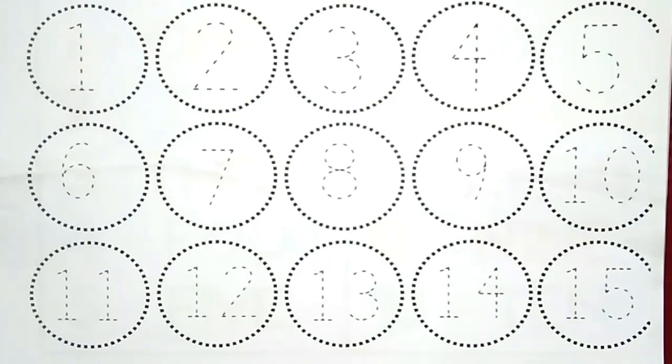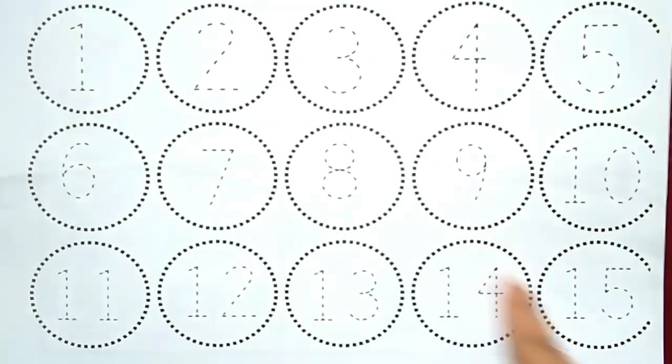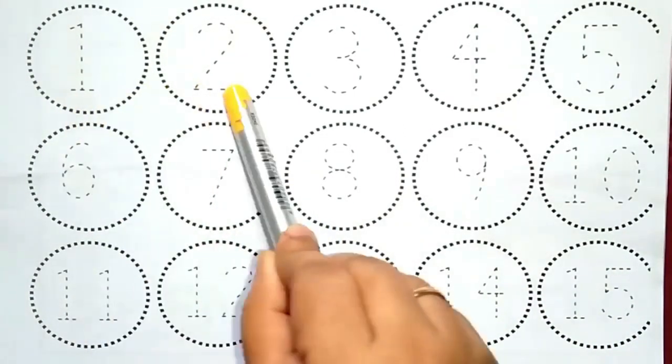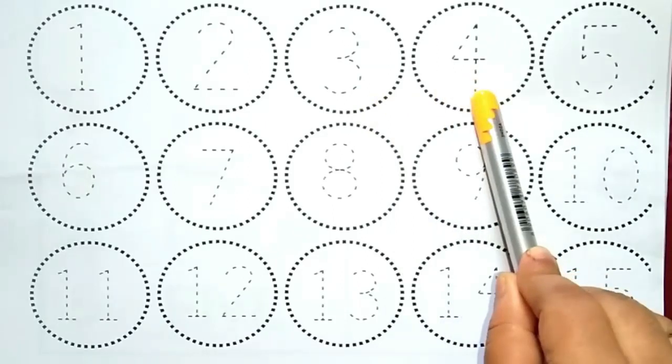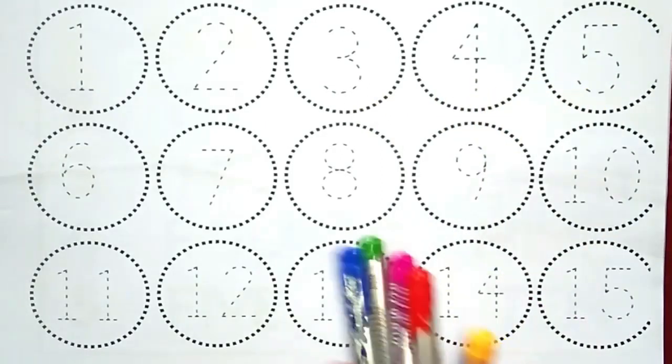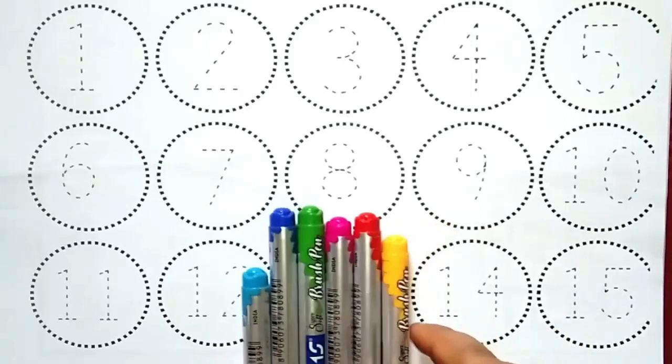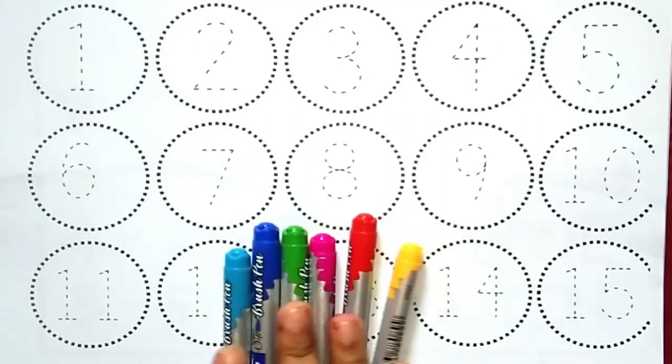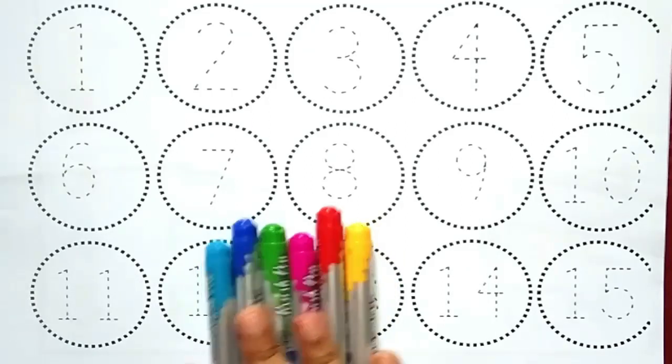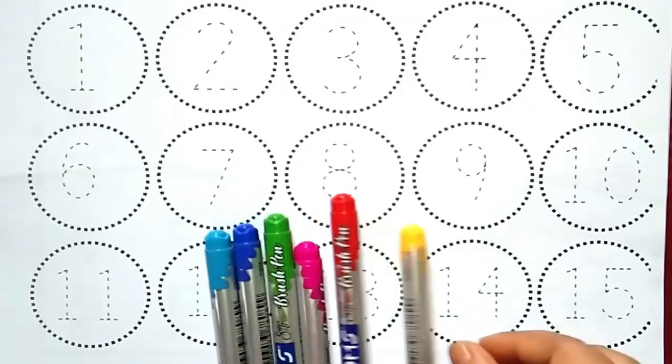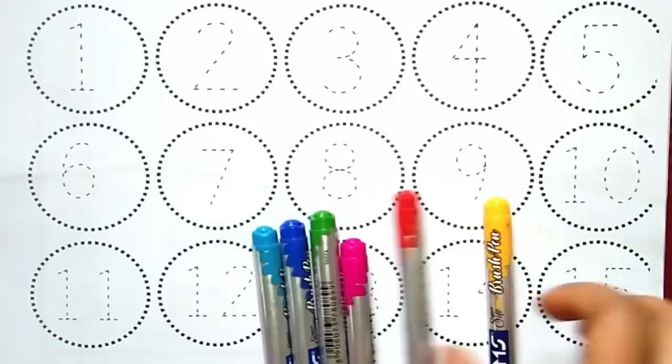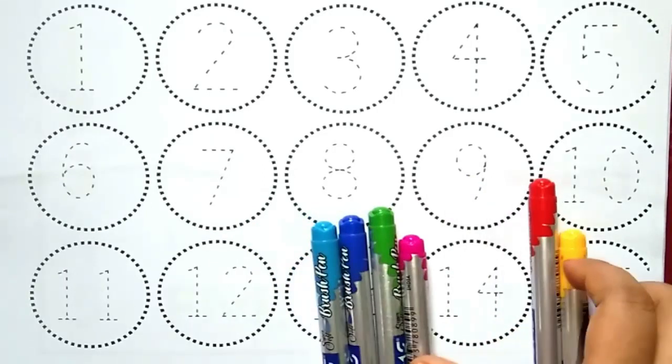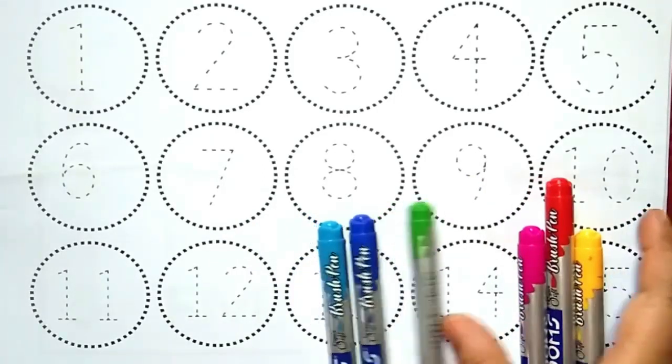Hello Bacchou, Swagat hai Aap Sabhi ko Aas ki Is Nye Video Me. Aas ki Is Video Me Hum Sikhne Aar Parne Wale One To Fifteen tak Numbers Counting. One, Two, Three, Four, Five. Let's learn to colors name. Yeh hai Hammari Colors. Pahal Hum Jahn Liet Hain Colors Name. Yeh Hammari Colors Kya Hai Colors. Yeh Colors Yellow Color, Red Color, Pink Color, Light Green Color, Blue Color, Sky Blue Color.